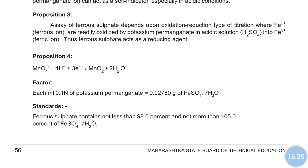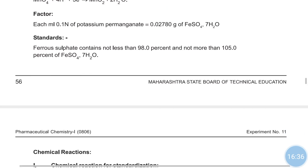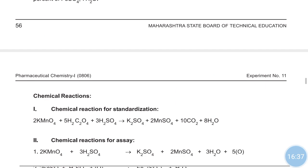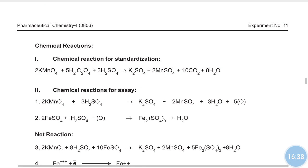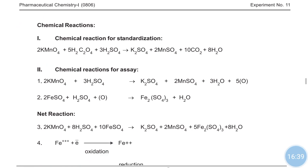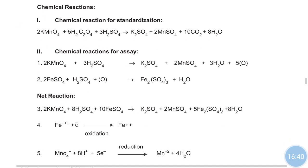The factor is that 0.1 normal KMnO4 corresponds to 0.02780 grams of FeSO4. These are the given standards. Next we move towards the chemical reaction.